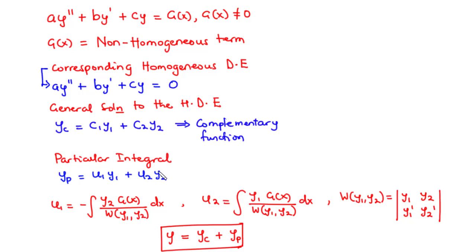To find the particular integral or particular solution, we vary the parameters by replacing the constants c₁ and c₂ in the complementary function with u₁ and u₂ respectively, where u₁ and u₂ are unknown functions of x. u₁ is given by the negative integral of y₂·g(x) divided by the Wronskian of y₁ and y₂, dx. And u₂ is given by the positive integral of y₁·g(x) divided by the Wronskian of y₁ and y₂, dx.